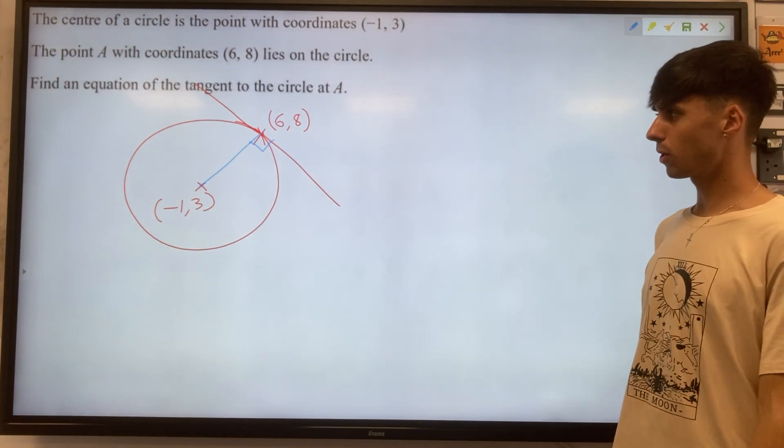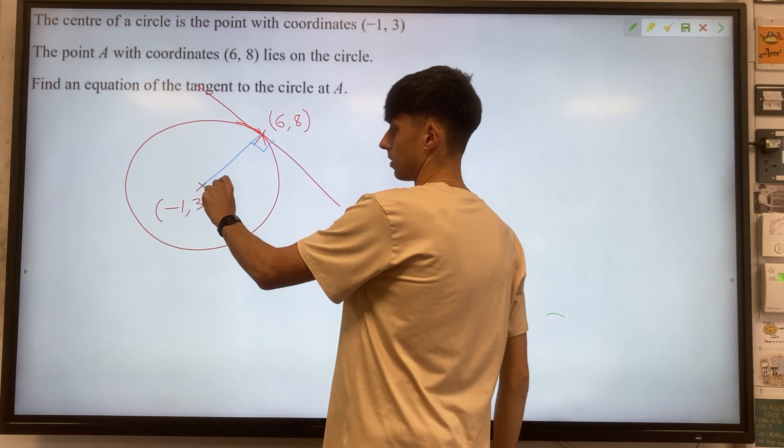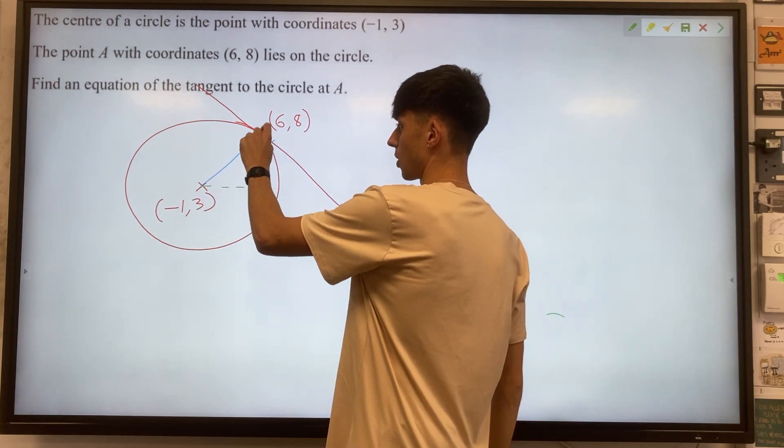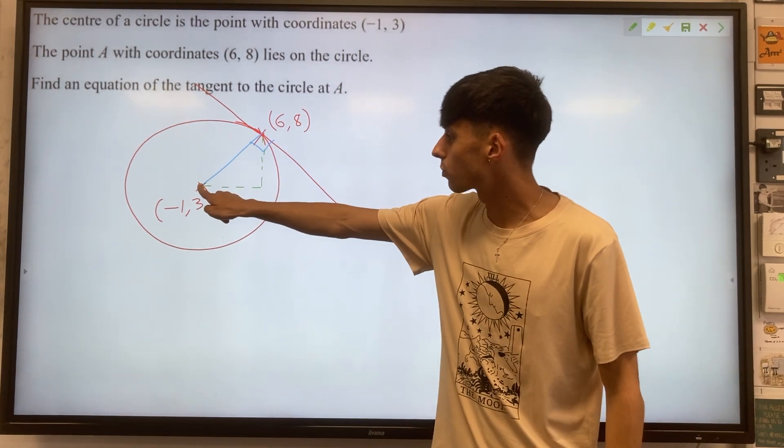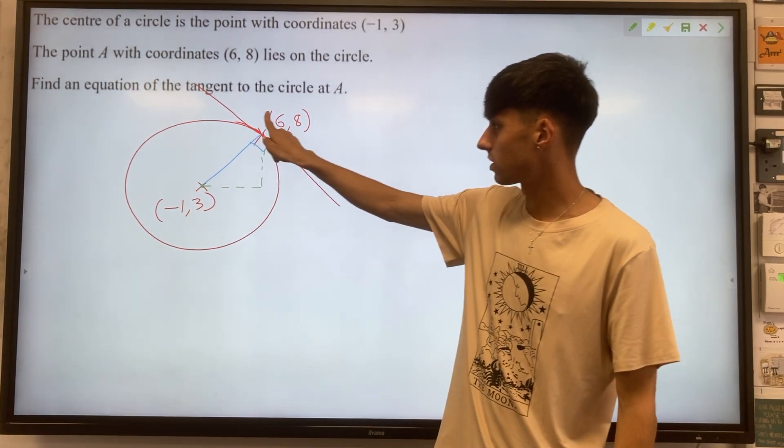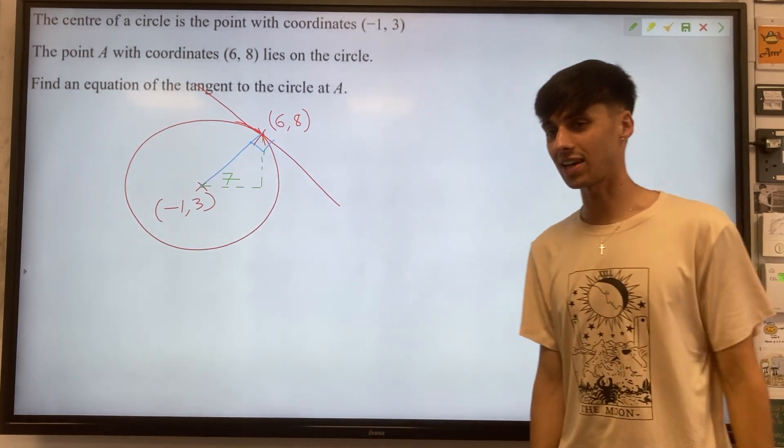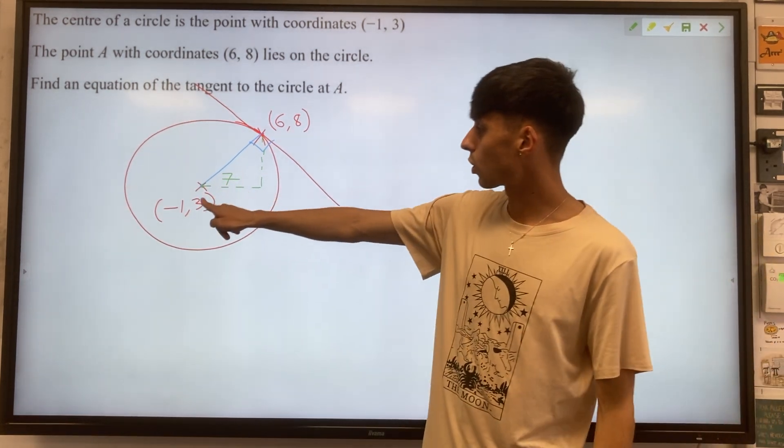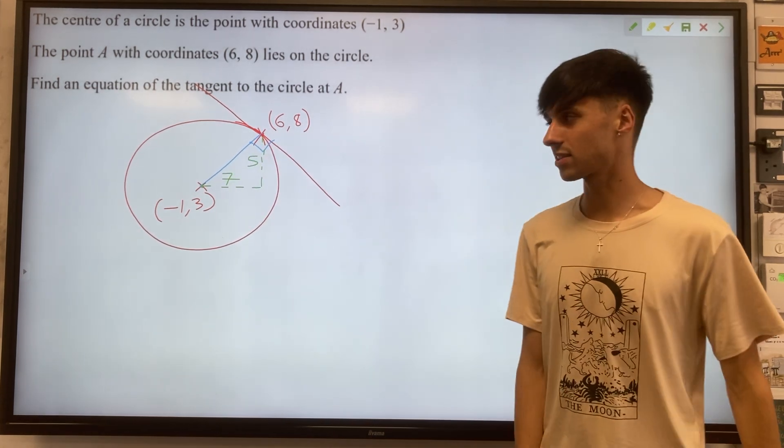And in this context we're thinking then about perpendicular lines and their gradients a bit later. Let's see what we can do first of all with our radius. So if we're imagining this in terms of x and y coordinates, to go from minus 1 to 6 we've travelled along 7 on our x-axis and to go from 3 up to 8, we've gone up 5 on our y-axis.